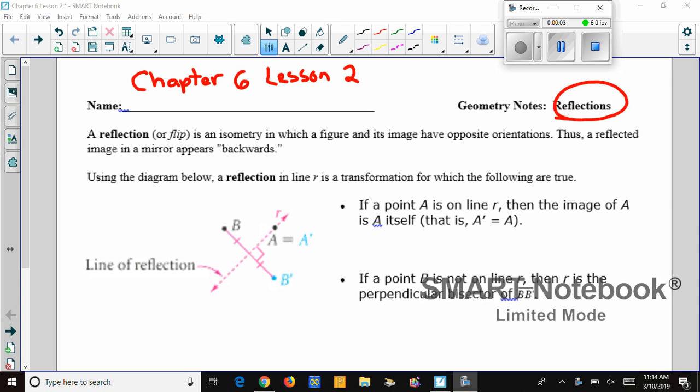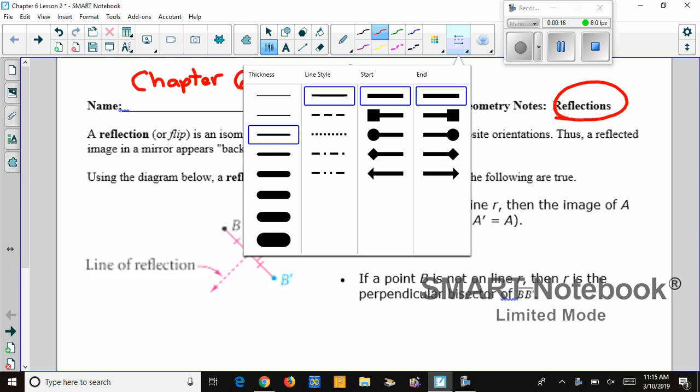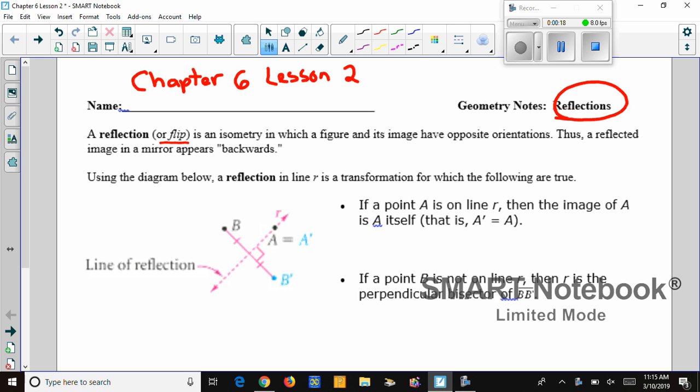Chapter 6, Lesson 2 will be about reflections on the coordinate plane. A reflection, or reflect as it might be easier to refer to it as, is an isometry in which a figure and its image have opposite orientations. Thus, a reflected image in a mirror appears backwards.